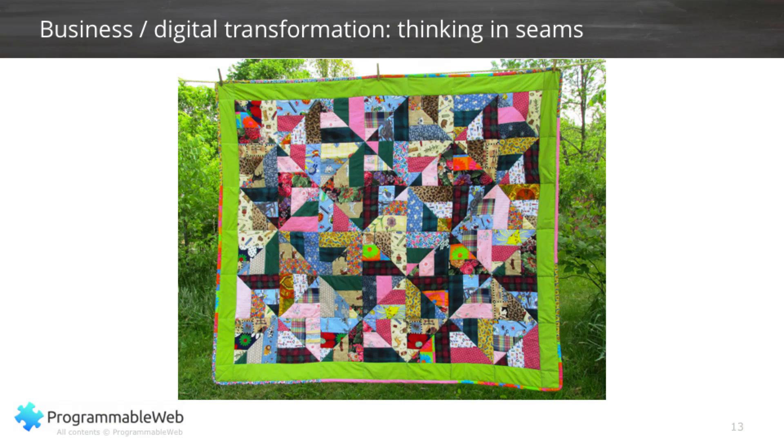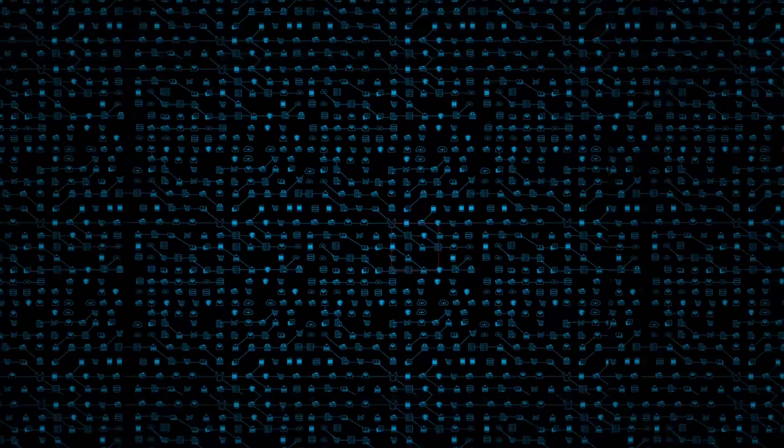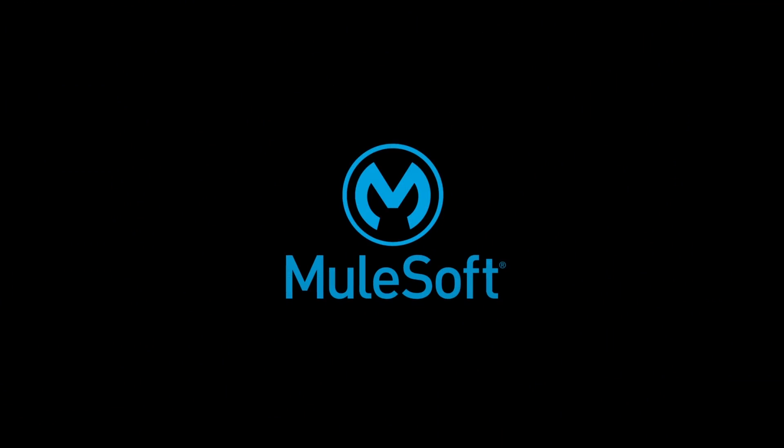That's the end of this third part of our 11-part video series on APIs 101. In the next part, we're going to talk a little bit more about how that flexibility brings you the idea of digital transformation and the ability to rip apart a huge monolithic infrastructure that looks like a hairball — something like this patchwork quilt — and turn it into something that is much more efficient. Thanks very much, and we'll see you in the fourth part of this series.